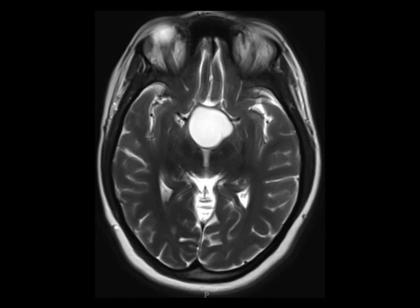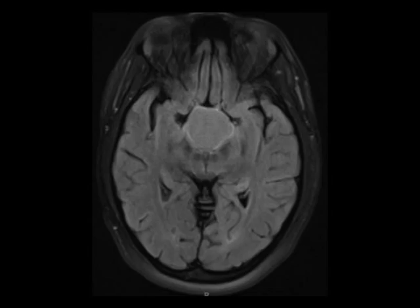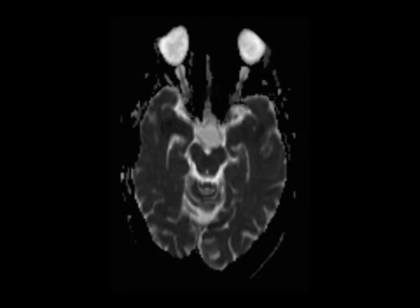There are lobular cystic components which extend into the enlarged sella turcica. The mass enlarges the suprasellar cistern with elevation and effacement of the floor of the third ventricle. The lesion extends posteriorly to the level of the interpeduncular cistern, which is slightly splayed. There is contact with and elevation of the optic chiasm and pre-chiasmatic segments of the optic nerves, as well as contact and partial encasement of the supraclinoid segments of the right and left internal carotid arteries.